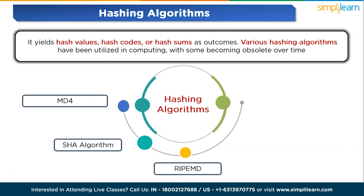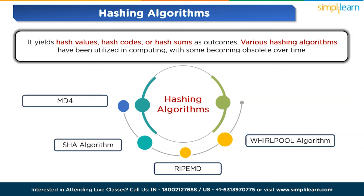Then comes RIPEMD, designed by Hans Dobbertin with a 160-bit length, created within the framework of the EU project RIPE. Then comes the Whirlpool algorithm, conceived by Vincent Rijmen and Paulo Barreto — this 256-bit algorithm produces a 512-bit message digest. And then we have the Tiger algorithm, recognized for its speed and efficiency. Tiger hashes over 132 million bits per second, surpassing other discussed algorithms, and stands out for its unrestricted usage devoid of any patents.